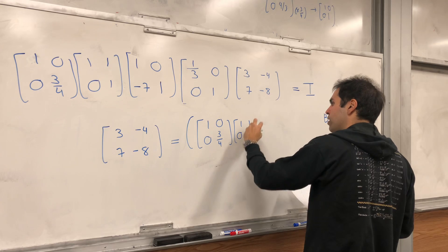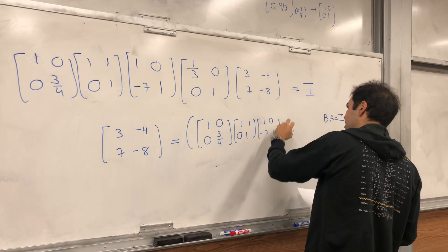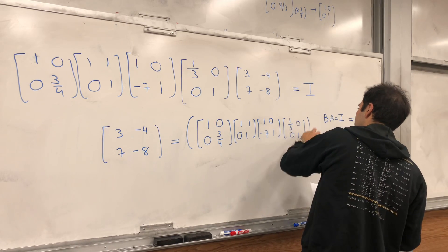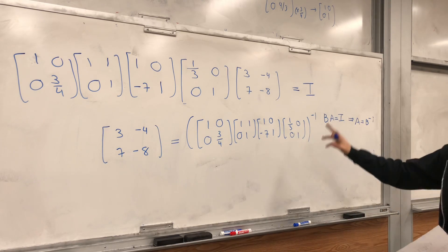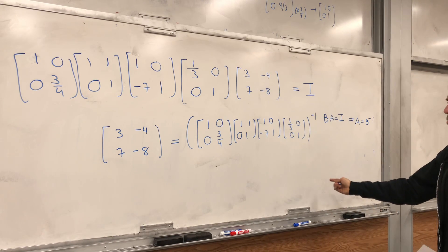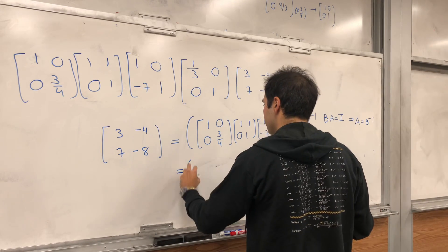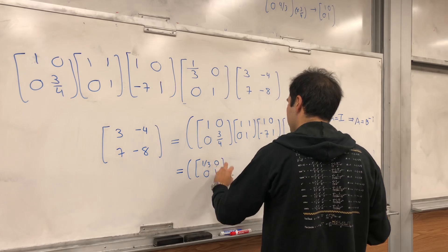1, 1, 0, 1. 1, 0, minus 7, 1. And, 1 third, 0, 0, 1. Inverse. And, remember to take the inverse of a product of the matrices, you reverse the order. So, it becomes, 1 third, 0, 0, 1. Inverse.